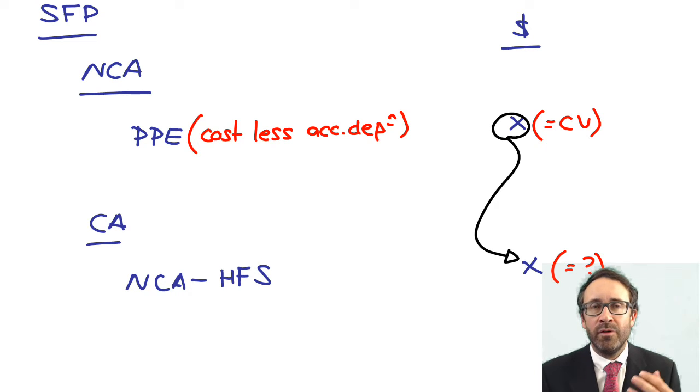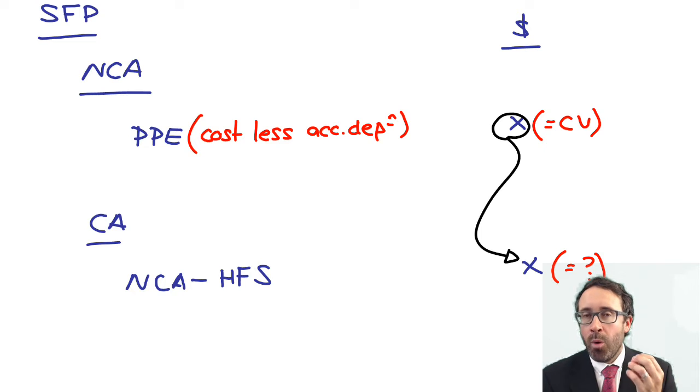There's an incentive for preparers of the accounts to classify it as non-current asset held for sale to prevent depreciation being charged, then not sell it, then move it back into PPE at a later date. Therefore, we've avoided charging depreciation for a period of time. So we have to have specific rules about when we classify it as a non-current asset held for sale and what value we include it at.